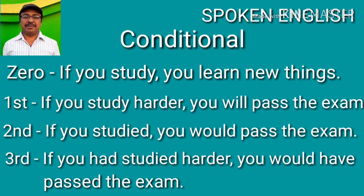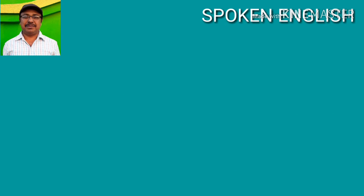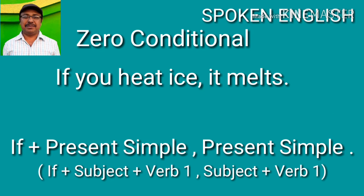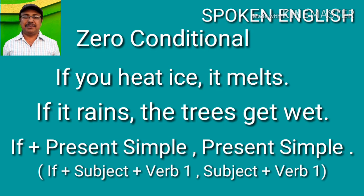Like: you will learn new things if you study. In the case of zero conditional, we can use 'when' instead of 'if'. Like: if you heat ice, it melts — or you can say: when you heat ice, it melts. If it rains, the trees get wet. It is scientific truth. So for general truth or scientific truth, we use zero conditional.